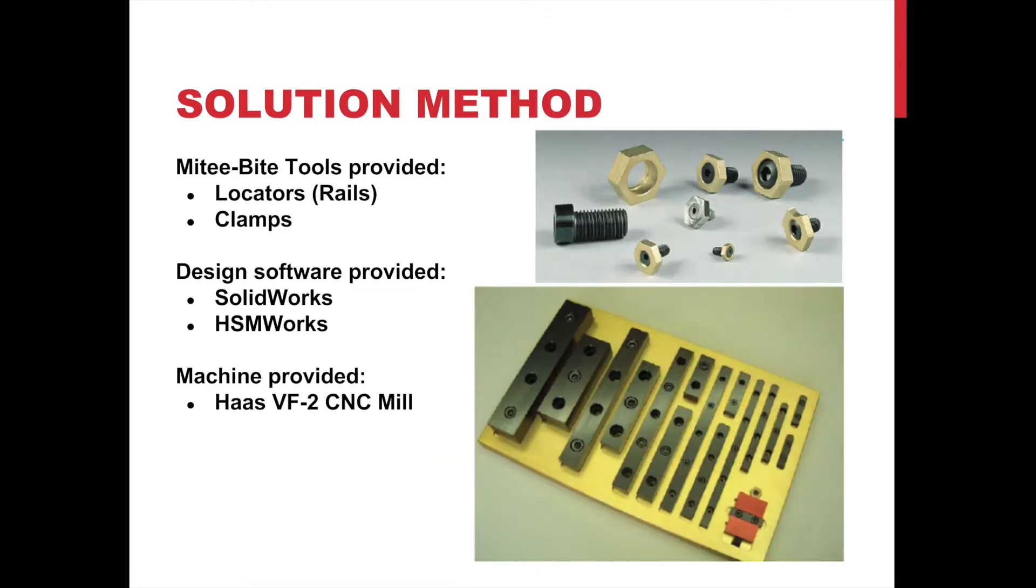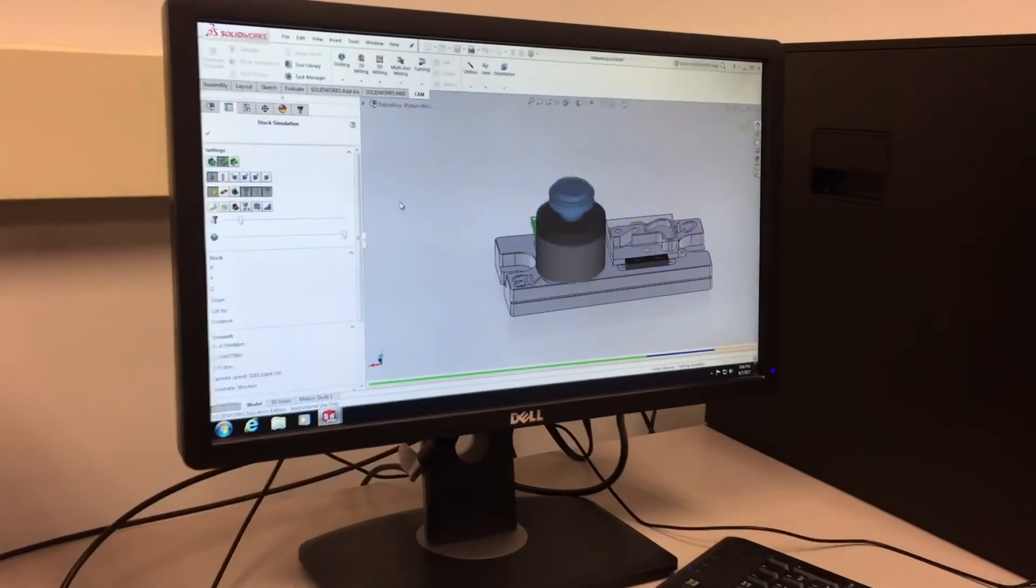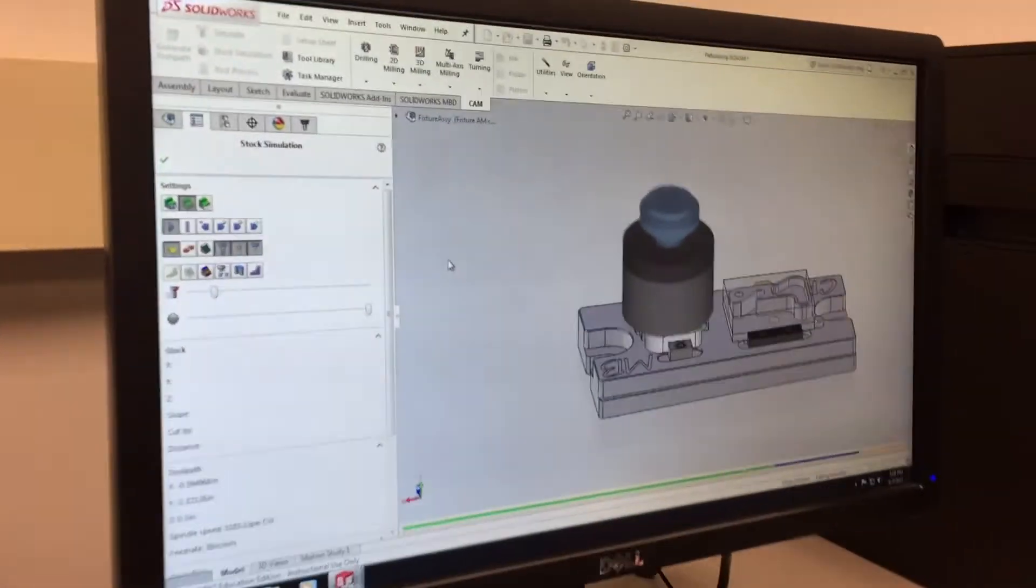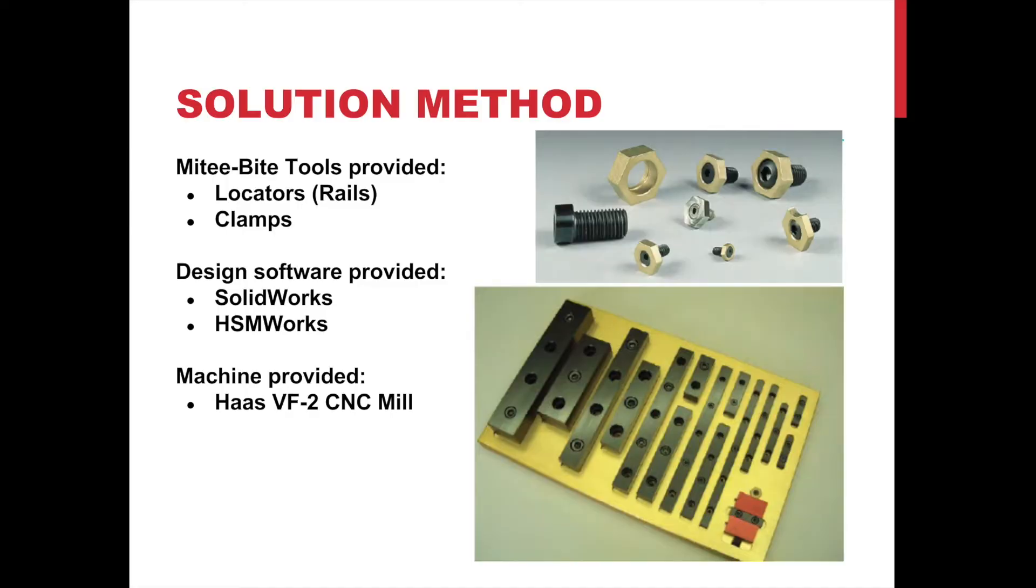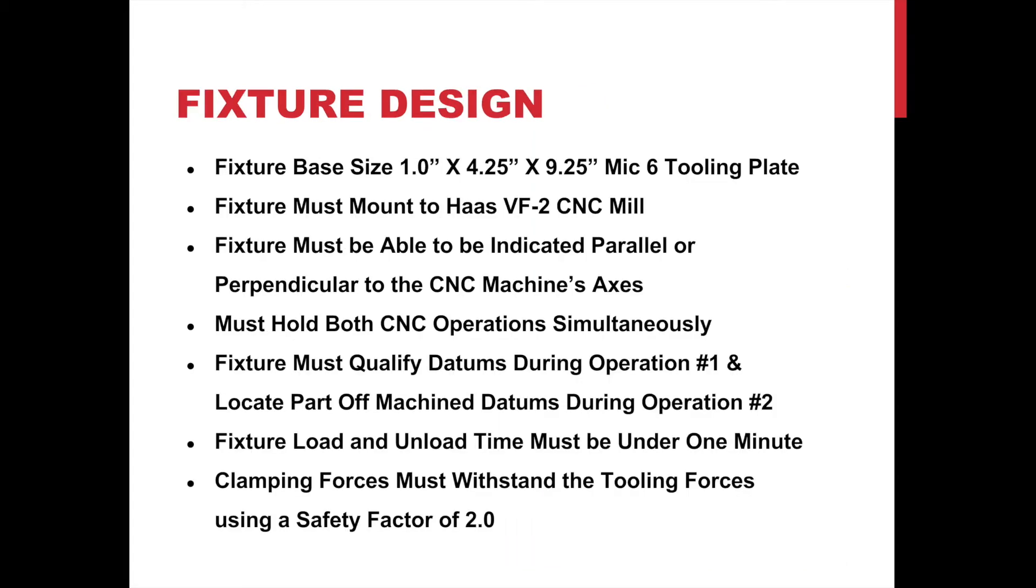Solution Method. The fixture will utilize the following tools provided by Mighty Byte to hold the parts during the CNC milling operations. These tools include locators and clamps. In addition, the software tools used were SOLIDWORKS and HSMWORKS to design the assembly and generate toolpaths. The Haas VF2 CNC mill ran the HSM toolpaths to manufacture the fixture and parts.